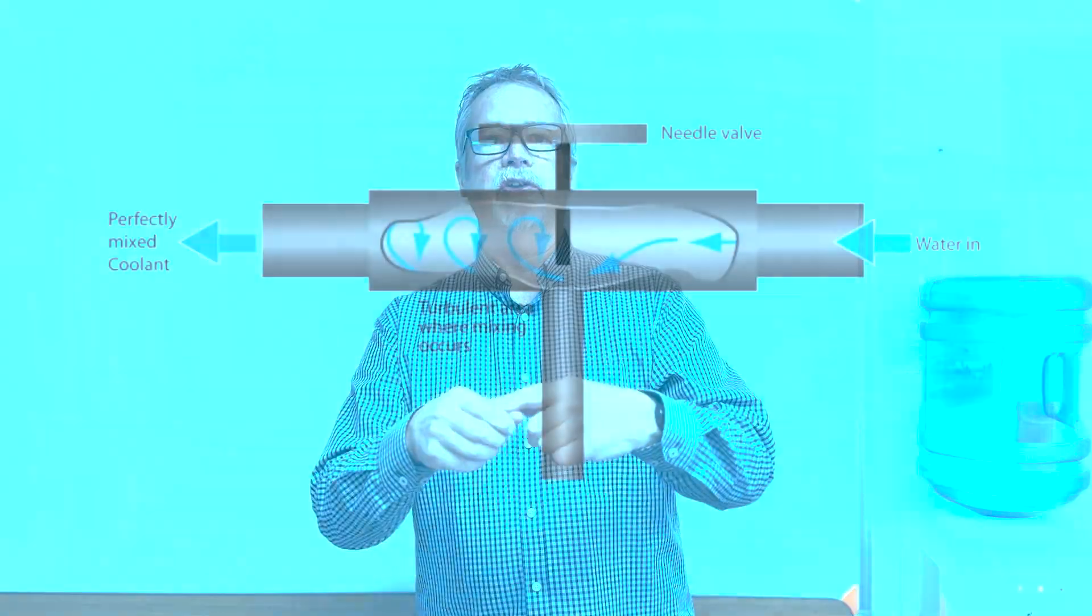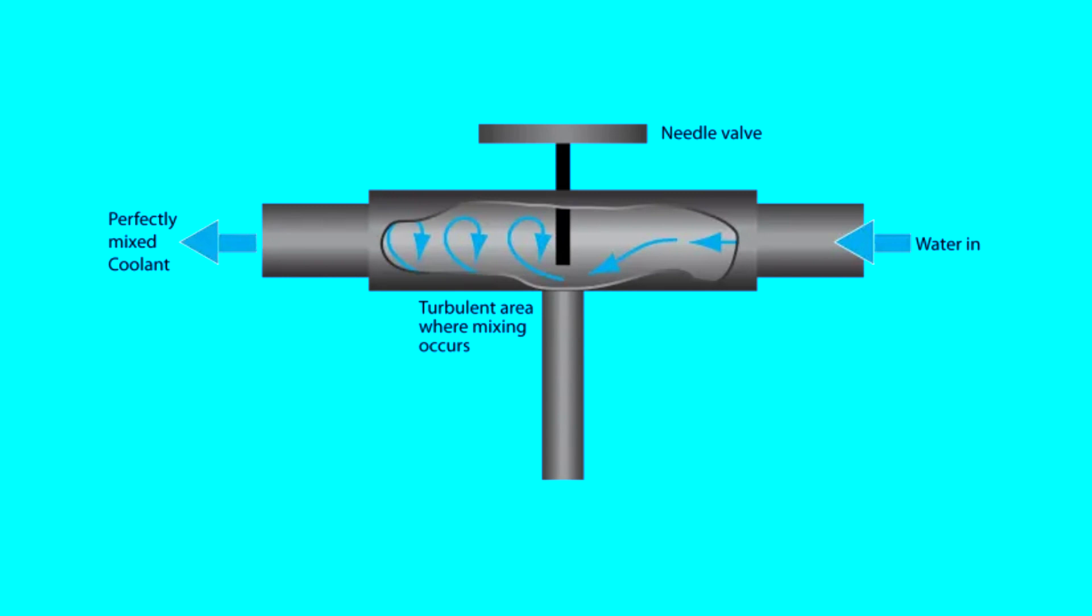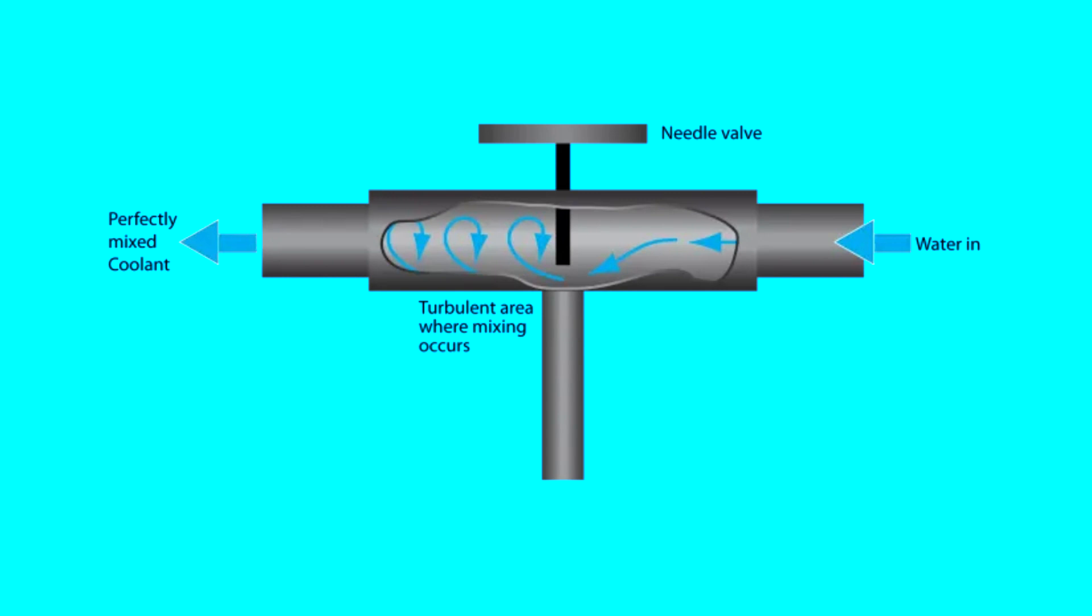So tying this SUS rating back to mixers. Venturi mixers are really good for coolants less than 500 SUS. If the coolant gets too thick, there's not enough vacuum to draw that coolant into the incoming stream and output it to your pail. So that kind of gets us into issue two.